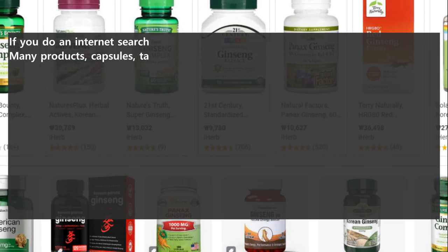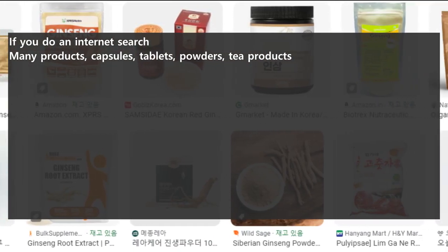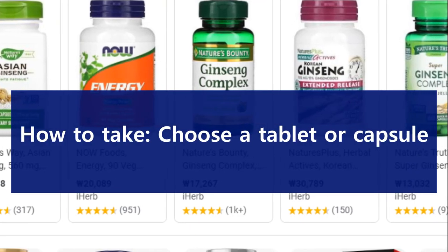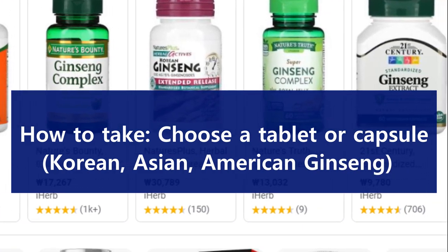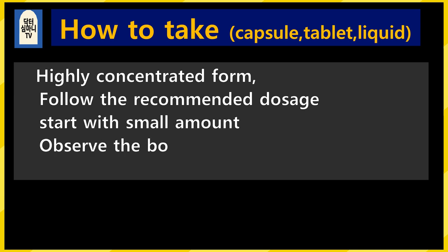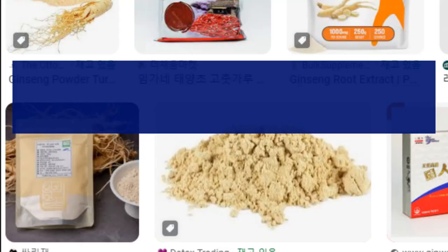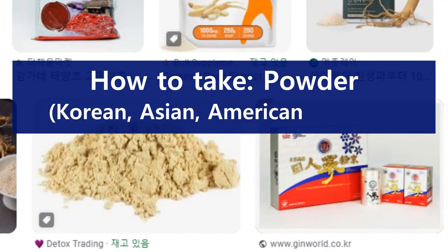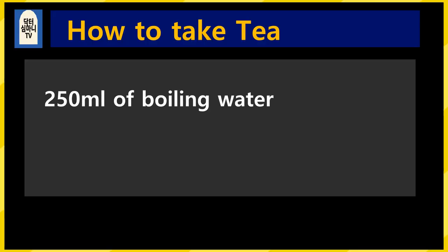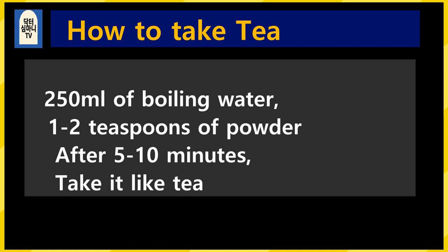If you search the internet, because ginseng is one of the best-selling herbs, there are numerous products. If you choose tablets or capsules, get Asian or Korean ginseng, and follow the recommended dosage — some products are in highly concentrated form, so be sure to follow the recommended dosage carefully. Start with a small amount and increase the dose slowly while observing your reaction. When taking ginseng as tea, buy powder. To 250cc of boiling water, add 1 to 2 teaspoons of Asian or Korean ginseng powder. After 10 to 15 minutes, take it like tea — 2 to 3 times a day after meals. Start with the smallest recommended dose and after at least 1 month, decide whether to continue or adjust the dose. I'll explain detailed dosage adjustment instructions in the final Part 4 lecture.